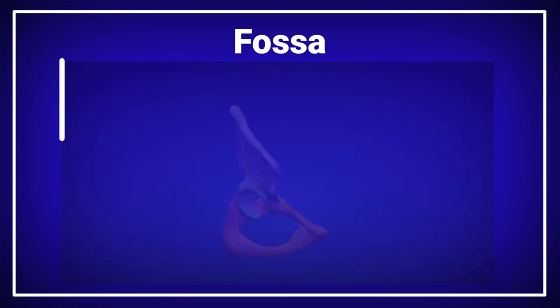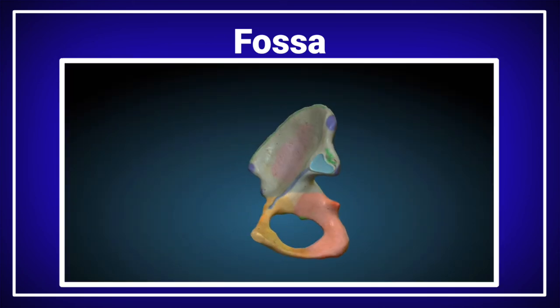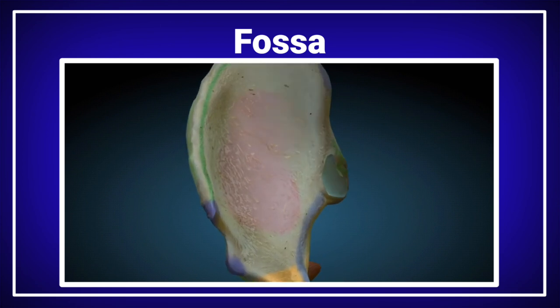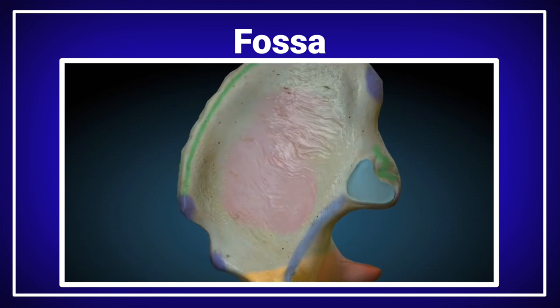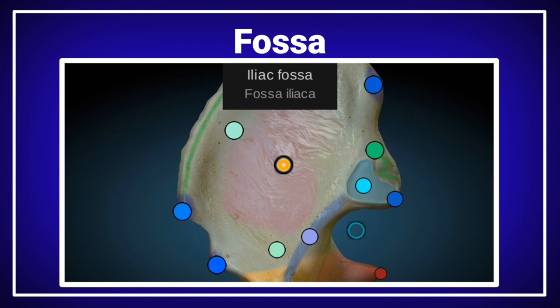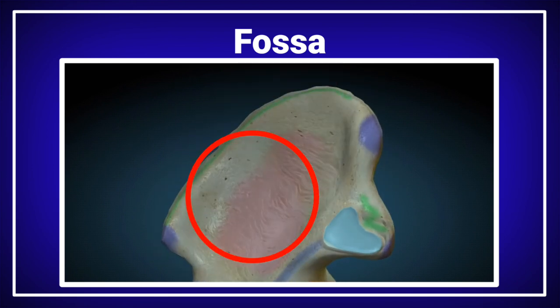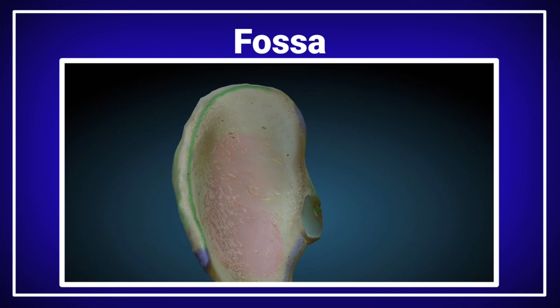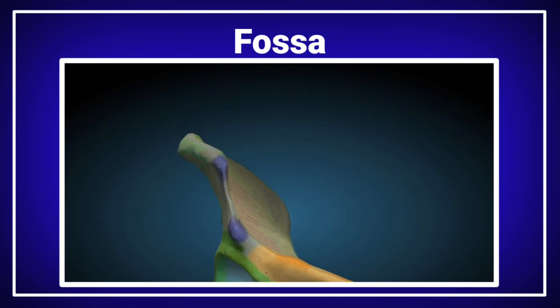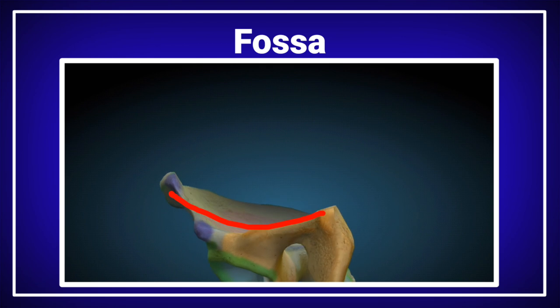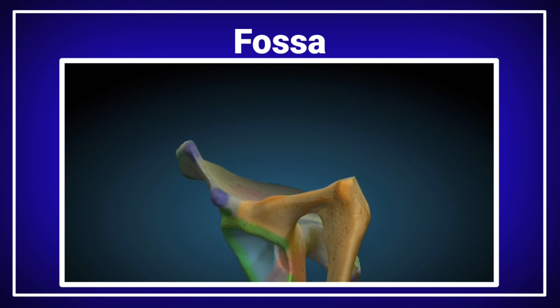The fossa is another type of depression. There are different kinds of fossae on different bones of the human body; however, we will discuss the iliac fossa of the hip bone. The iliac fossa is located on the hip bone and is a deep depression. This is the depression of the iliac fossa of the hip bone.